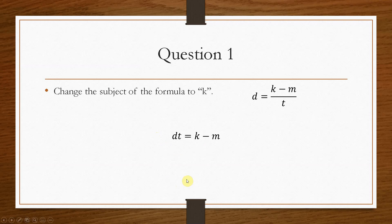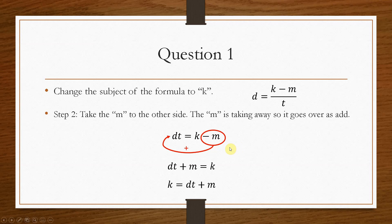Now the next thing is we have to get rid of the m. It's minus m on this side, so when it goes over, it will have to go over as a plus. So your equation now becomes dt plus m equals k. Now that is your final answer, however, it's sometimes a little bit nicer to write the equation as k equals dt plus m.